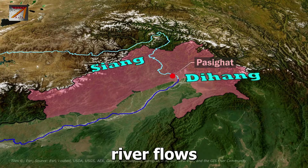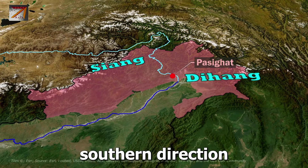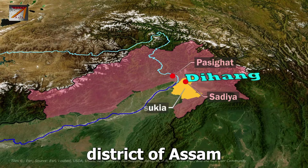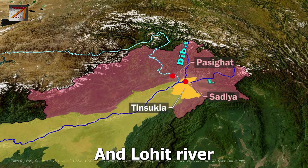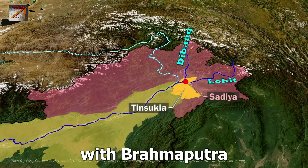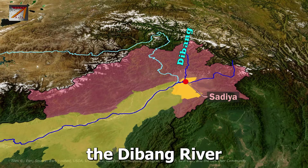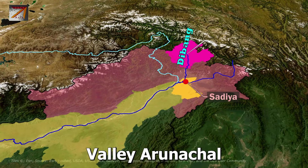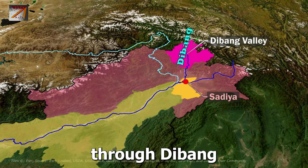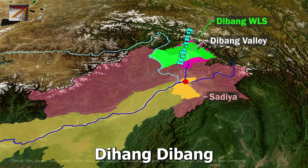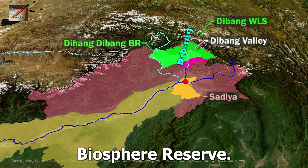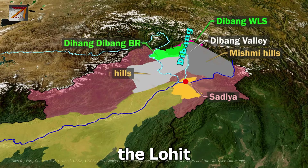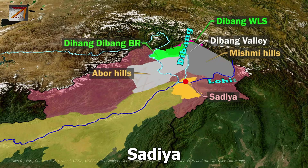The Brahmaputra flows from Pasighat in the southern direction and reaches Sadia in Tinsukia district of Assam, where Dibang and Lohit rivers merge with it. The Dibang river originates from Dibang valley in Arunachal Pradesh, passes through Dihang Wildlife Sanctuary and Dihang Dibang Biosphere Reserve, then through Mismi hills and Abhor hills before meeting the Lohit river near Sadia.